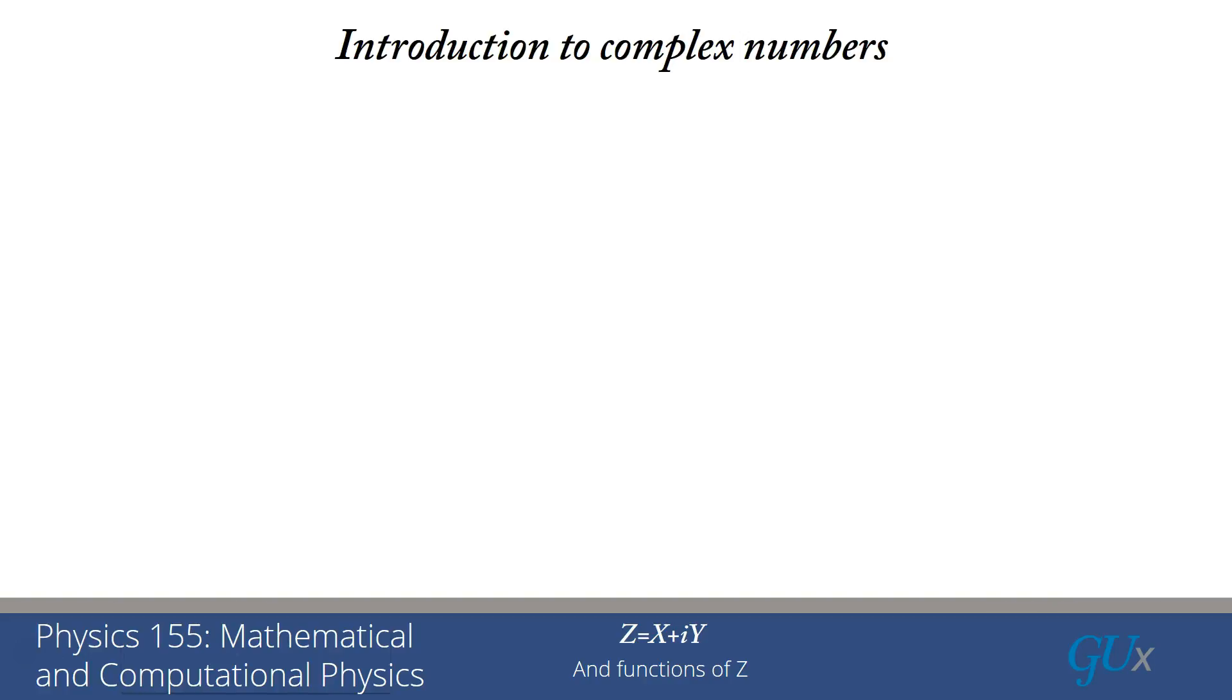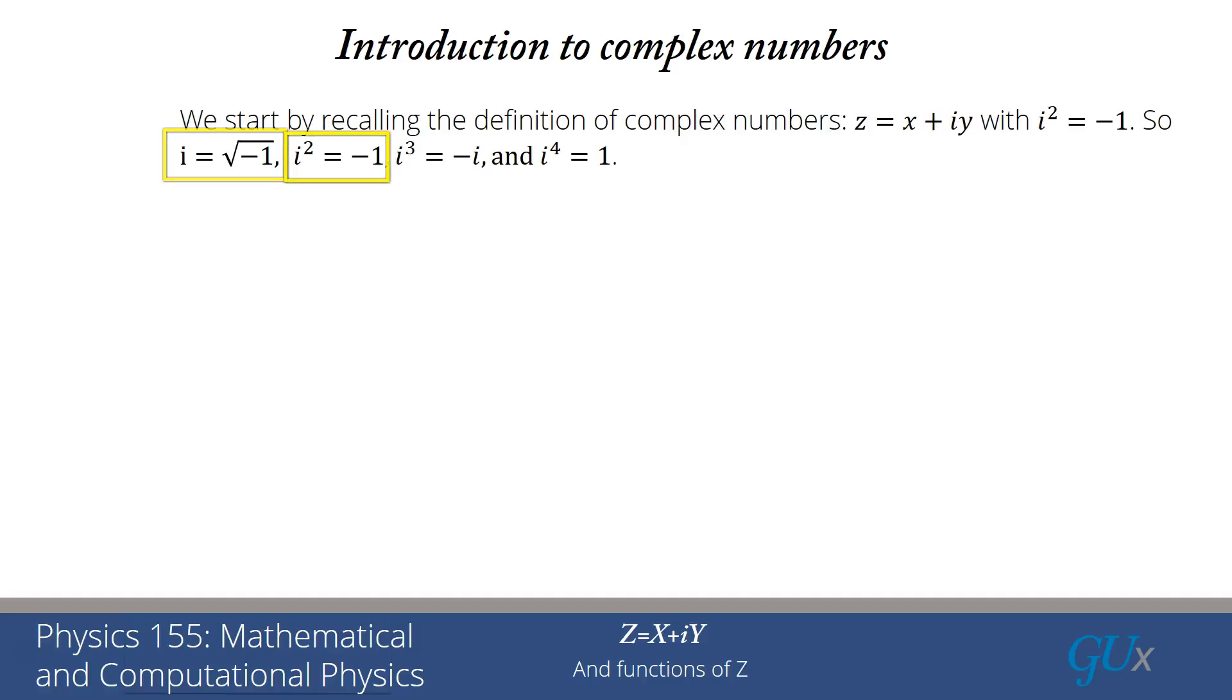We're going to start our unit on discussing complex numbers. Complex numbers are closely related to numbers in two dimensions. We write Z is X plus IY with i squared equals minus 1. So i is the square root of minus 1, i squared is equal to minus 1, i cubed is equal to minus i, and i to the fourth is equal to 1. So i is a fourth root of unity.